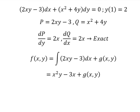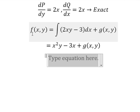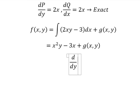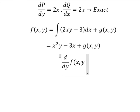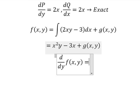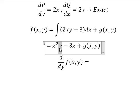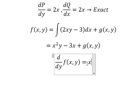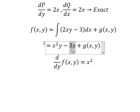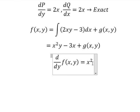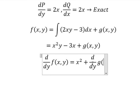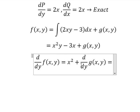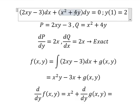We need to do the first derivative of F with respect to y. So we have y in here. First derivative of y, we have number 1. So we have x squared. This one we don't have y, so you get zero. And we have d over dy of g(x,y). And we know that this equals this one.